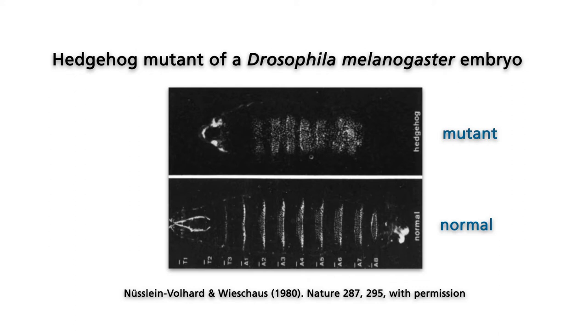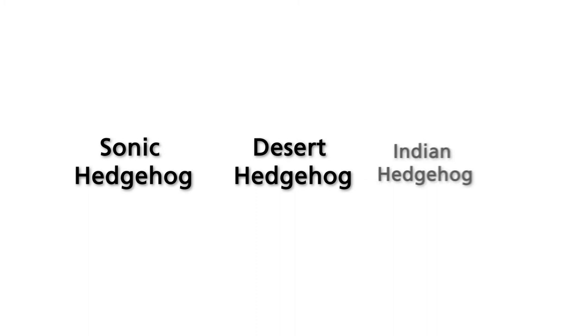In humans, disruption of hedgehog signaling can result in developmental disorders but may also cause or facilitate the growth of tumors. Whereas Drosophila has only one hedgehog gene, vertebrate genomes contain three homologous genes: sonic hedgehog, desert hedgehog, and Indian hedgehog.